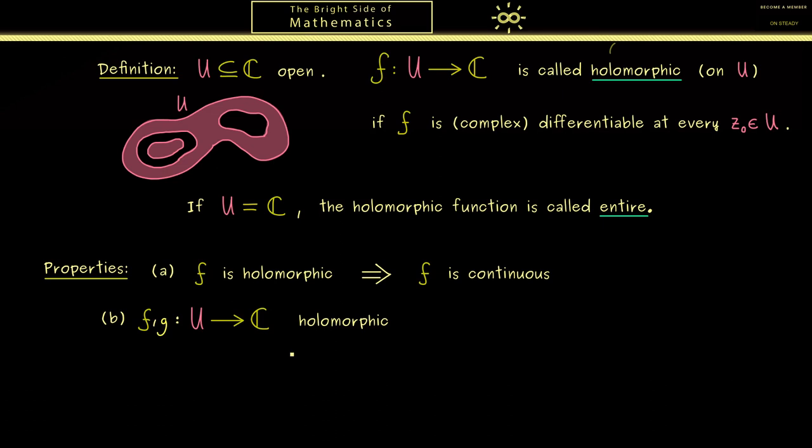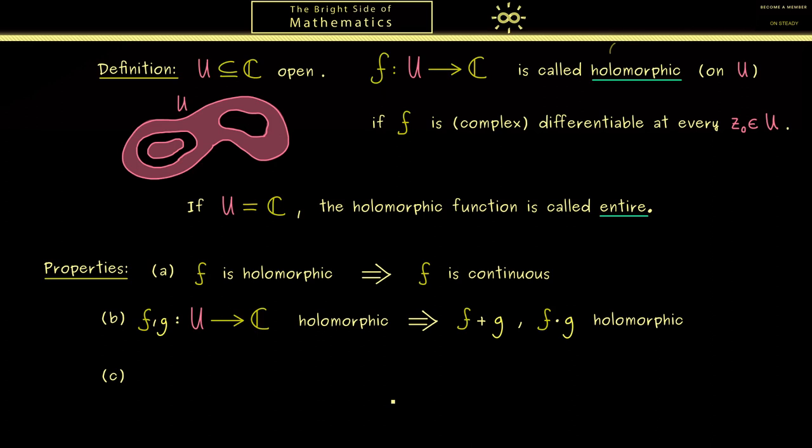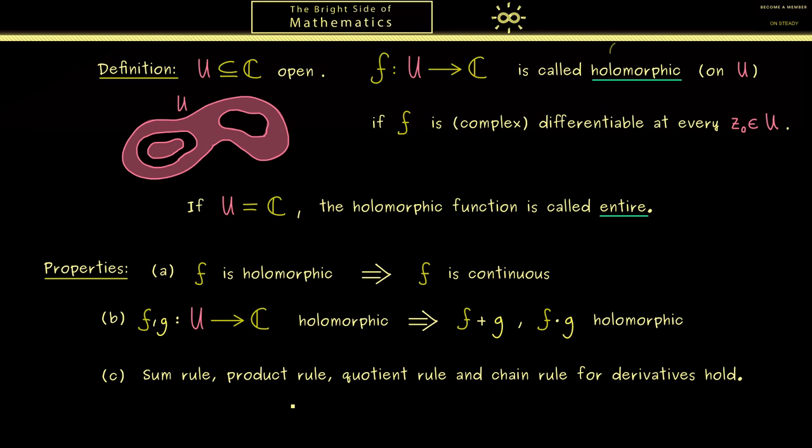For example, we still have our sum and product rule for derivatives when we consider two functions. Therefore this implies if f and g are holomorphic functions, the sum and the product are also holomorphic functions. Of course this is a fact we will naturally use a lot in calculations. Now besides the sum and product rule, you also know the chain and quotient rule for derivatives. And also for them we can just redo the proof from real analysis. Therefore we can just state sum, product, quotient, and chain rule still hold. For example, you can check my video about the chain rule for real functions. And when you see the proof you will see that you can do the same steps when you consider complex numbers instead of real numbers.